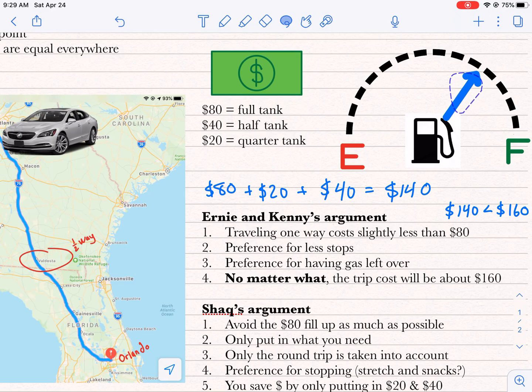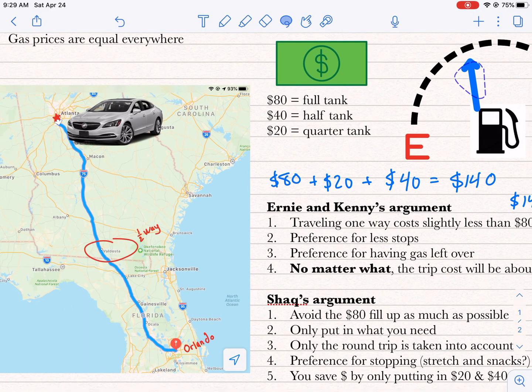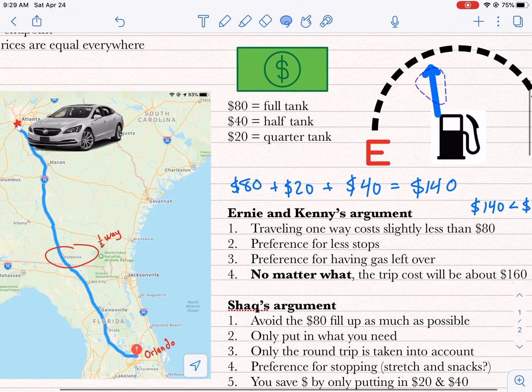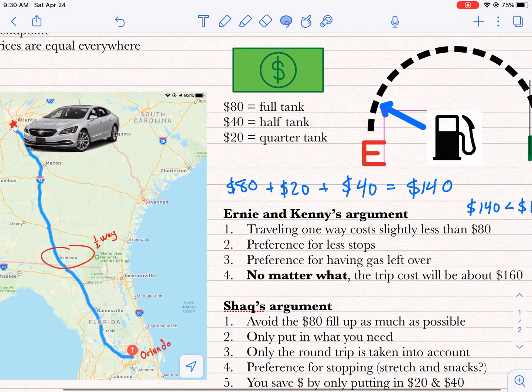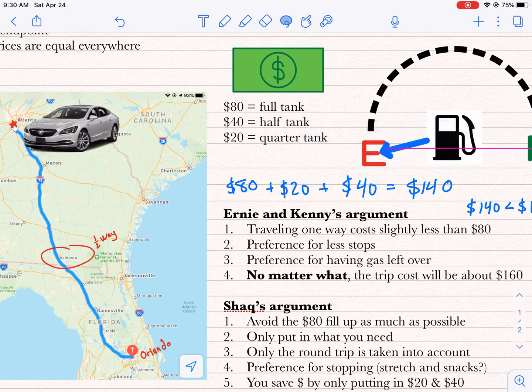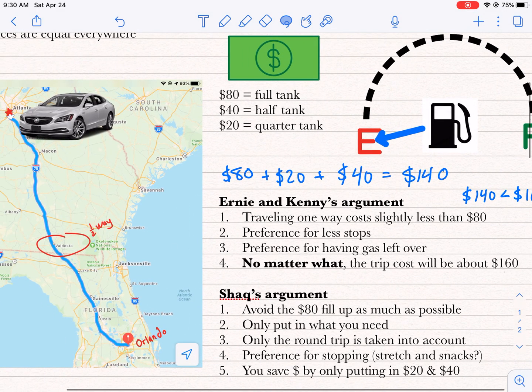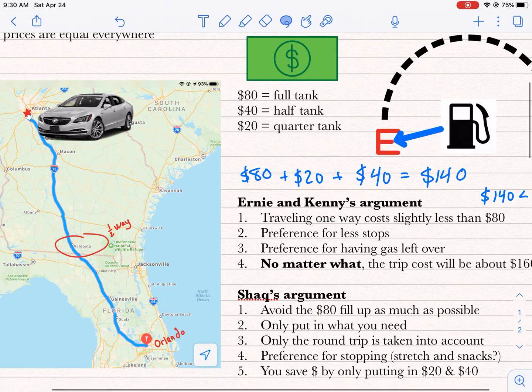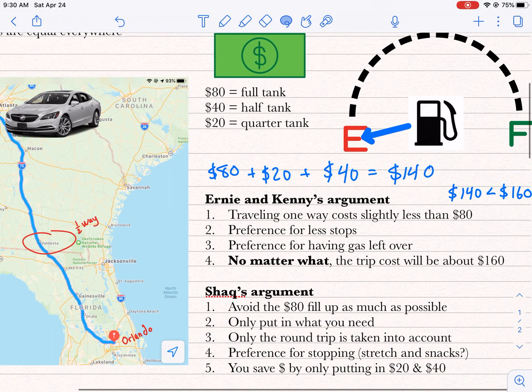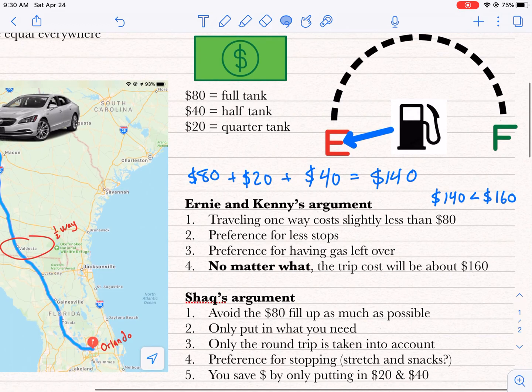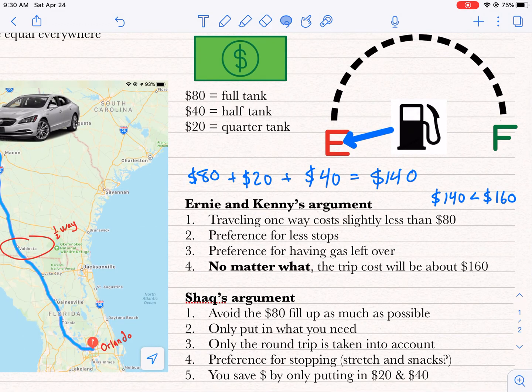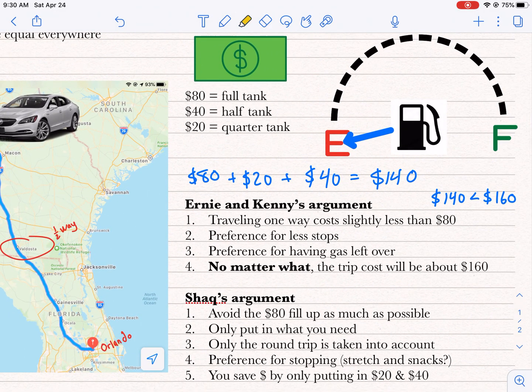If the whole trip takes a full tank to get from Orlando to Atlanta, then you're going to be short if you only have three quarters of a tank left. You're going to be really riding on E by the time you get there. You might be on fumes. So if you don't mind being on fumes and really pushing it, having that gas tank light come on by the time you get to Atlanta, then you're going to have a problem. If it takes an entire tank to get from Orlando to Atlanta, you're going to be short. You might be running out of gas by the time you get back to Atlanta.